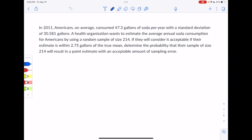So we're going to start off with making a few changes so that I'm giving help rather than answers. We're going to change the mean to 46.3 gallons, and then we're going to change the sample size from 214 to 219. And then finally, we're going to change the acceptable amount of sampling error from 2.75 gallons to 2.25 gallons.